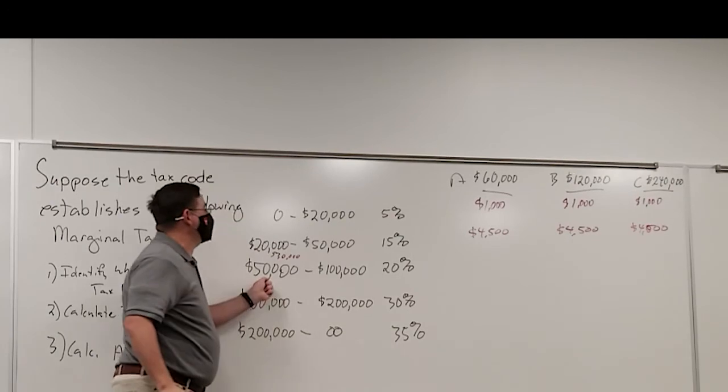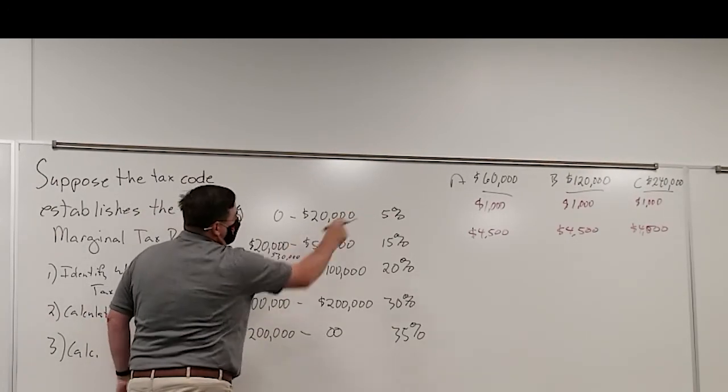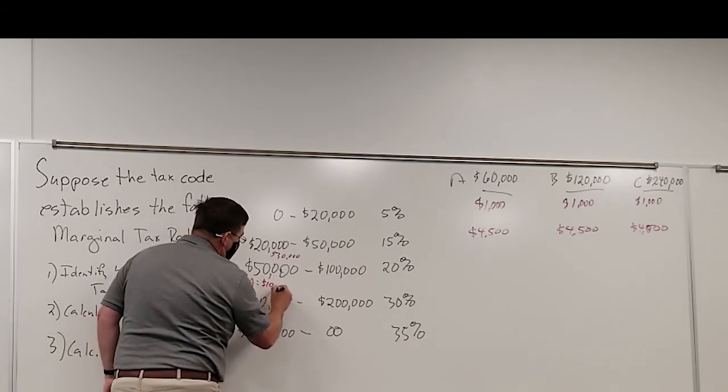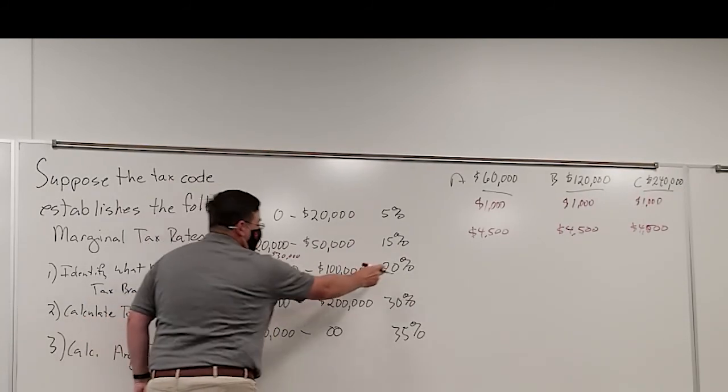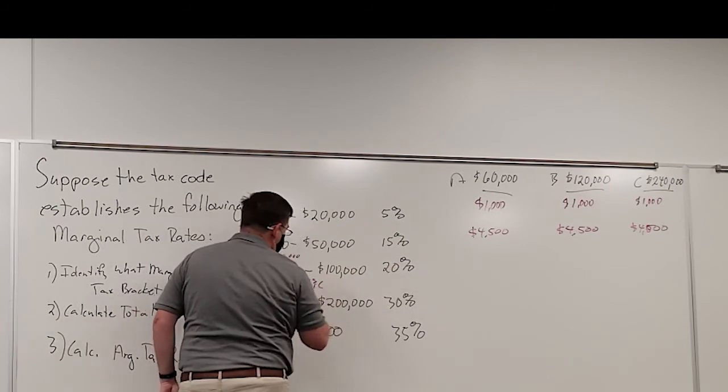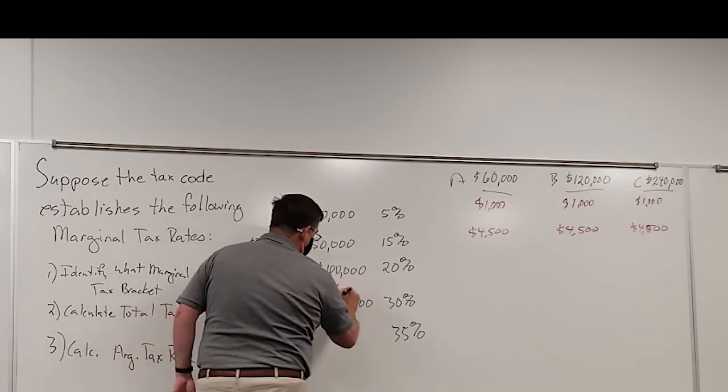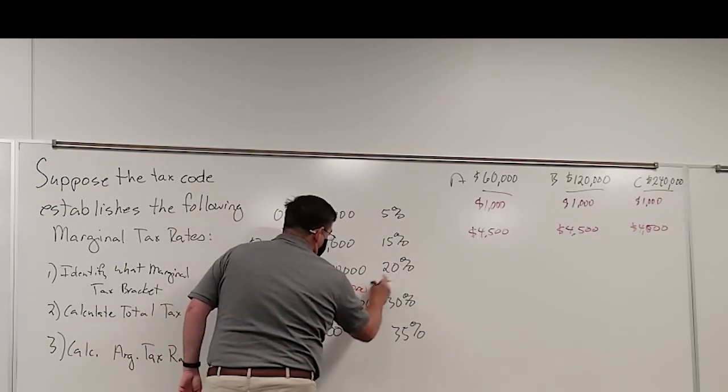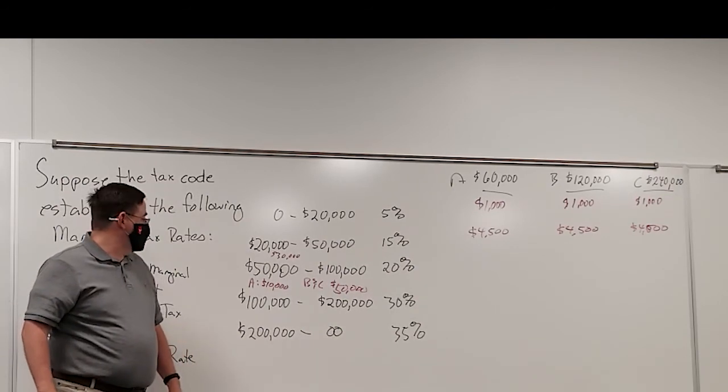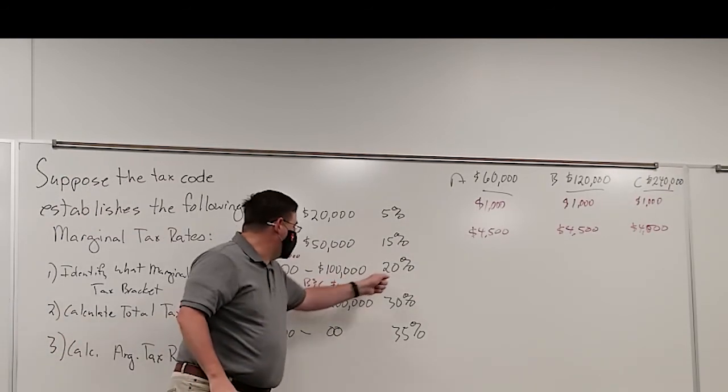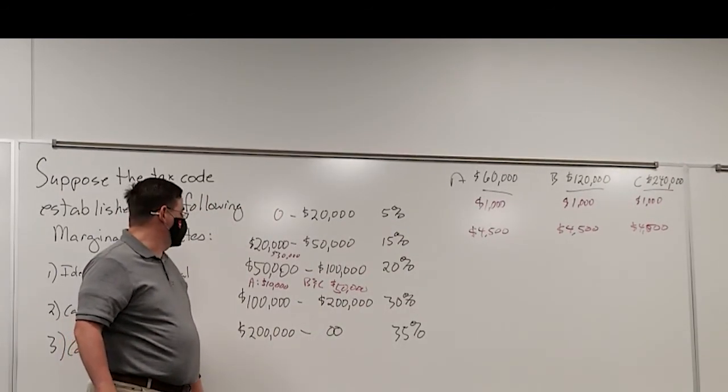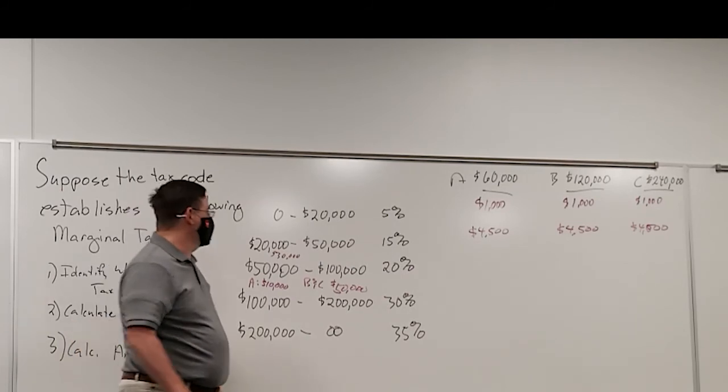Now, once we get to the next tax bracket, family A only has total income of $60,000. So they've got $10,000 that is going to be taxed at this rate. Families B and C are going to be taxed $50,000 at this rate. Are you still with me? So then what's $10,000 taxed at 20%? $2,000.